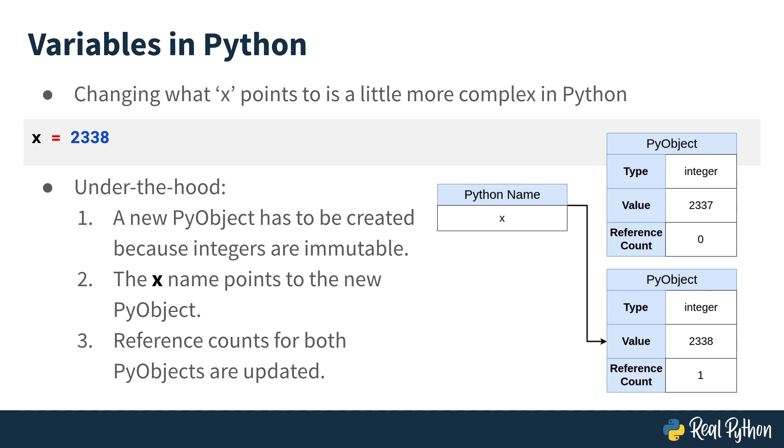If this were a mutable type, like a list, we wouldn't see this PyObject duplication happen. The value of that PyObject could be changed directly.